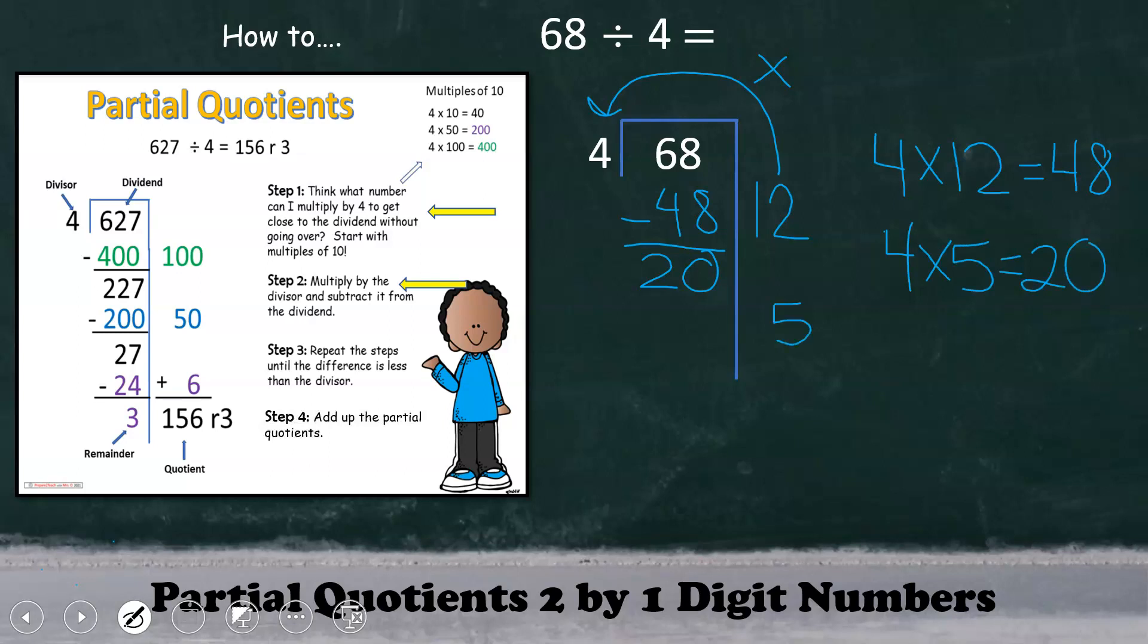And we have an exact fact for that, 4 times 5. Write the 5 there, making sure to line it up with the ones place, and then multiply. 4 times 5 is 20, subtract, and we end up with 0. In this last step, students just simply add up the partial quotients. Now that we have our answer, we know that 68 divided by 4 equals 17.